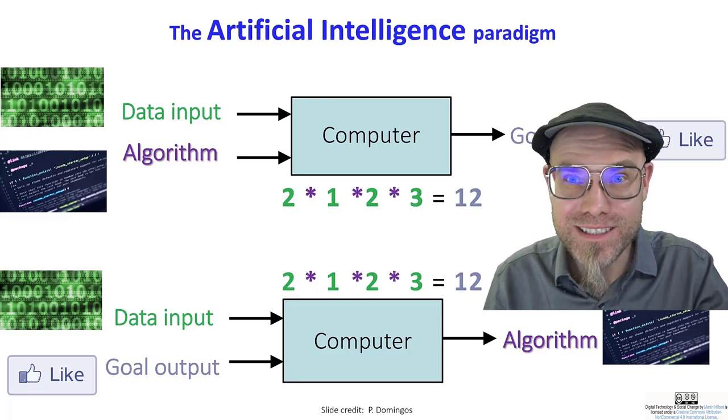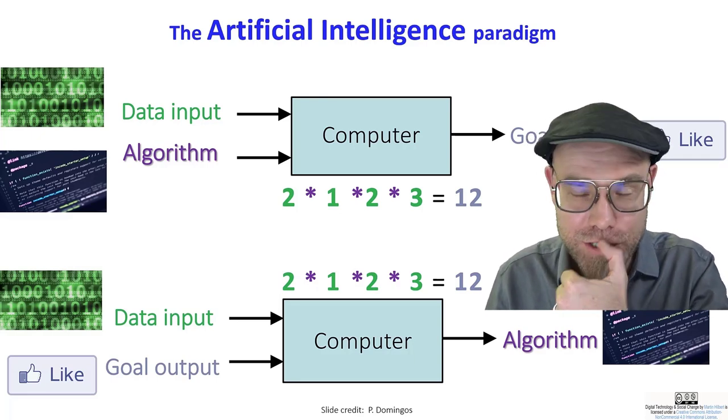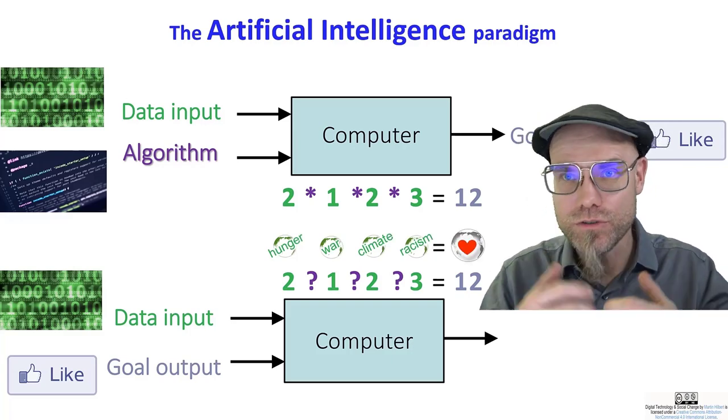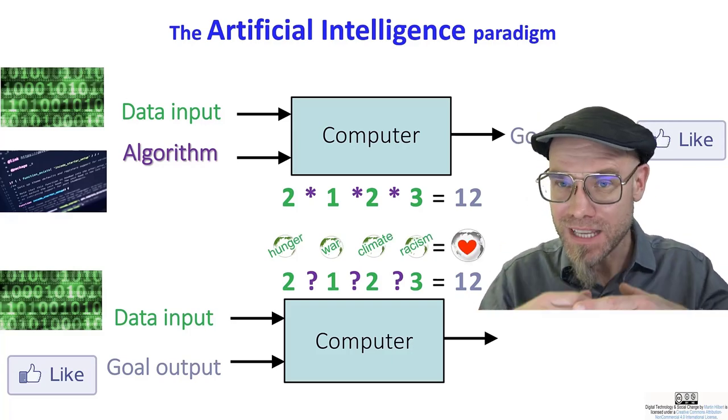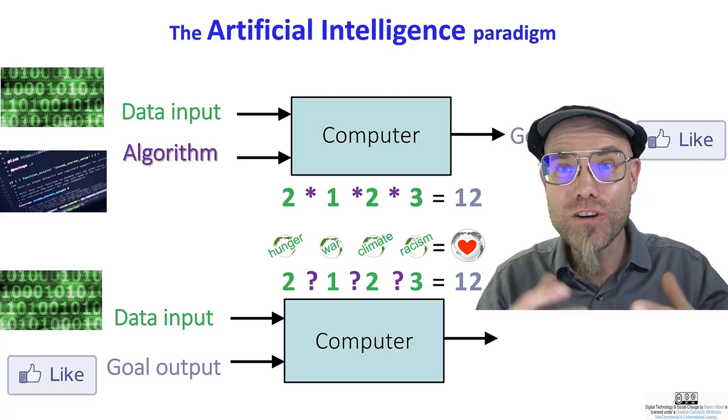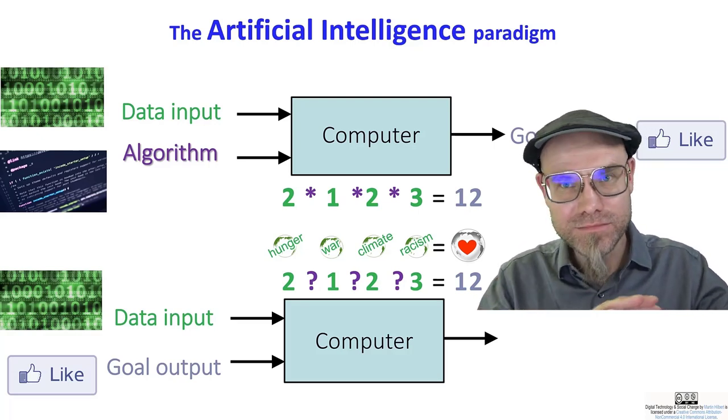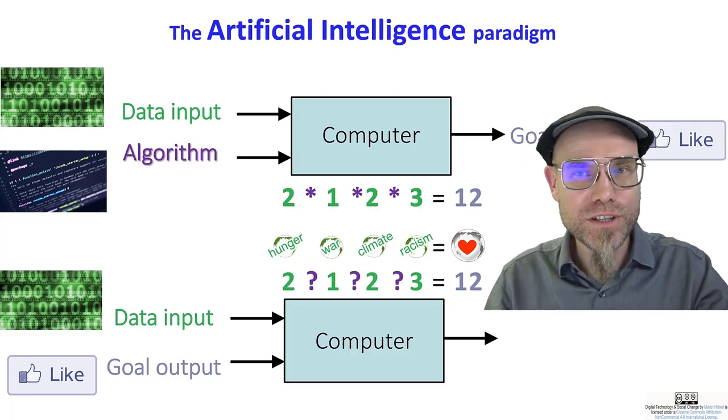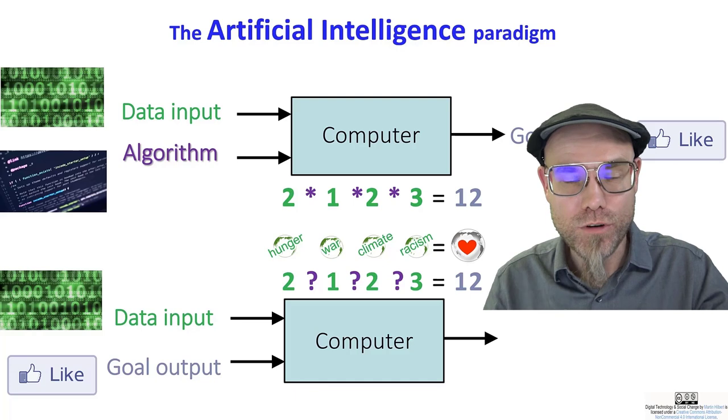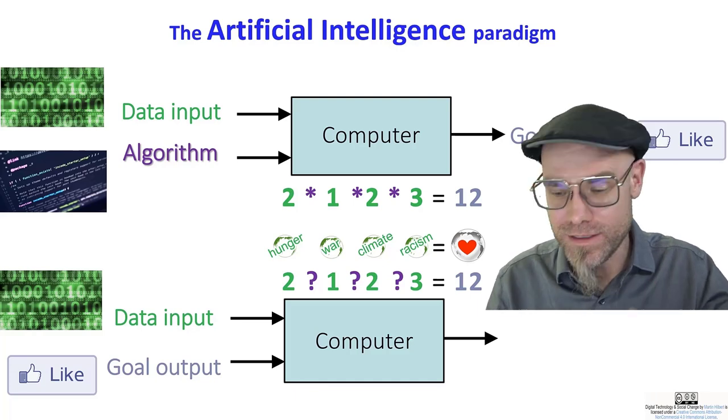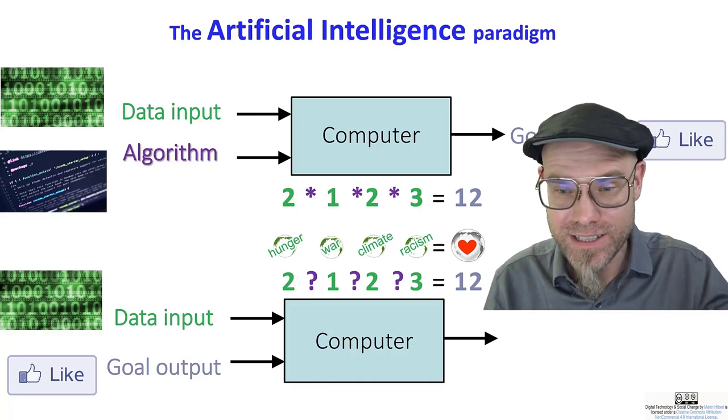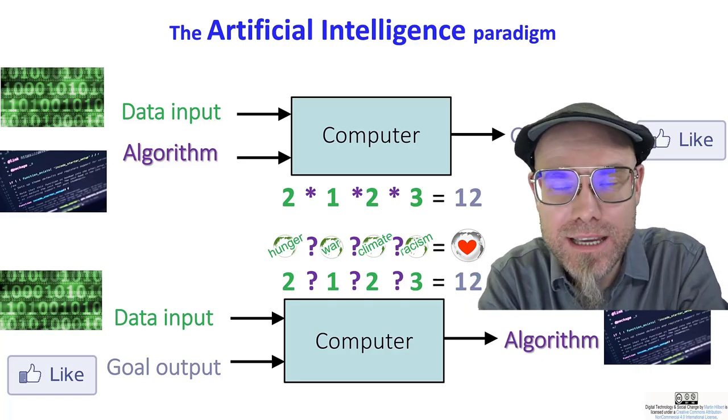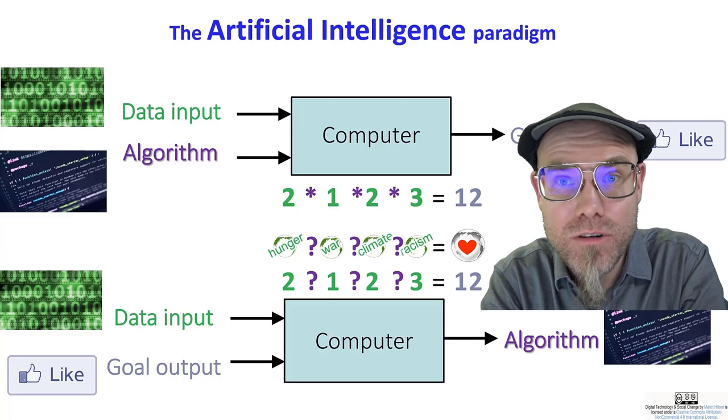And of course, one of the most exciting promises of the artificial intelligence paradigm nowadays is that you can go out of distribution. So you train it with some data, but then you hope to learn something new from the machine. The machine can combine things in ways we never looked at. So in theory, we could feed it with all our world's problems, hunger and war and the climate crisis and racism. And we say, well, how can we solve all of them? How can we make the world a better place?